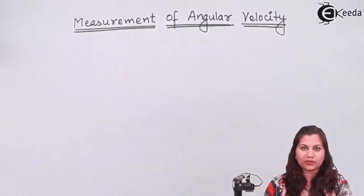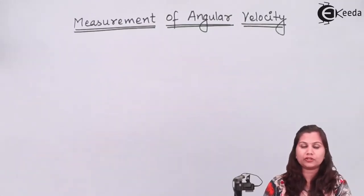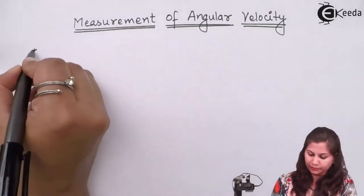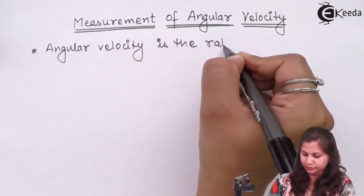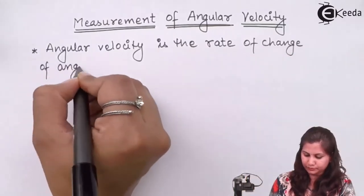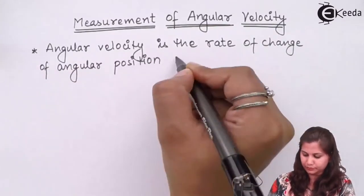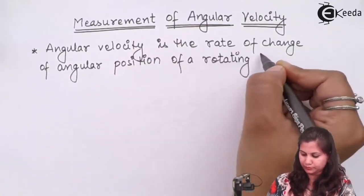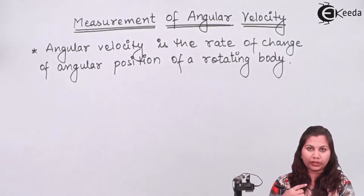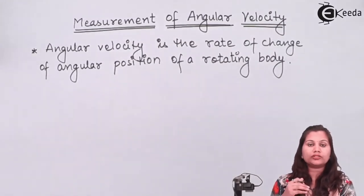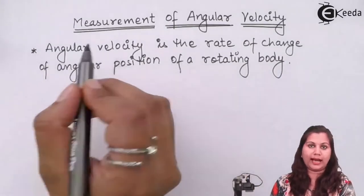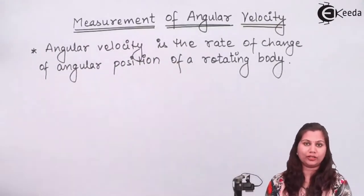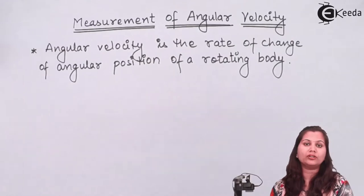What is angular velocity? Angular velocity is defined as the rate of change of the angular position of a rotating body. If an object is rotating about its axis, the change in position of that object with respect to time is the angular velocity. So we can say that angular velocity is related with objects which are rotating.